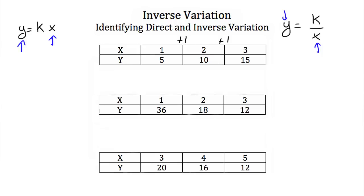To confirm it's a direct variation, if x's increase by the same amount, then y values must also increase by the same amount. Going from 5 to 10 is an increase of 5, and going from 10 to 15 is also an increase of 5. So this is a direct variation, because we increase by the same amount in y as we increase by the same amount in x.